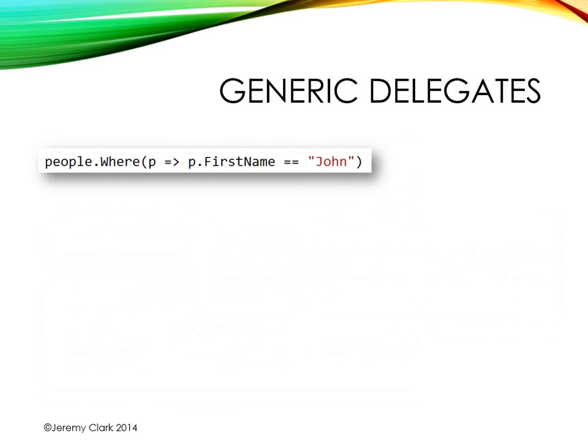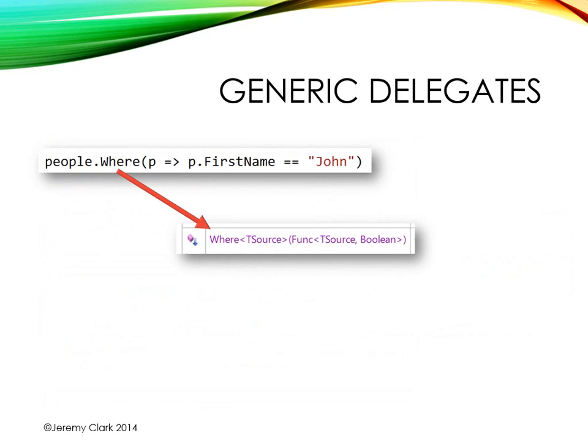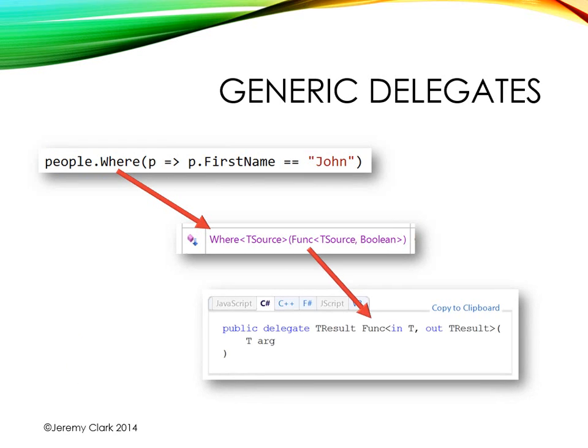Generic type parameters are also useful in delegates. When we're dealing with LINQ, we deal with a lot of really cool methods. It turns out that things like the Where method actually take parameters which are delegates — in this case, Func of TSource, boolean. Func is just a delegate that has generic type parameters representing the incoming parameters and the outgoing return value. We'll be taking a closer look at this so we can see how to use these delegates in our own code. So let's jump into the code and see this stuff in action.